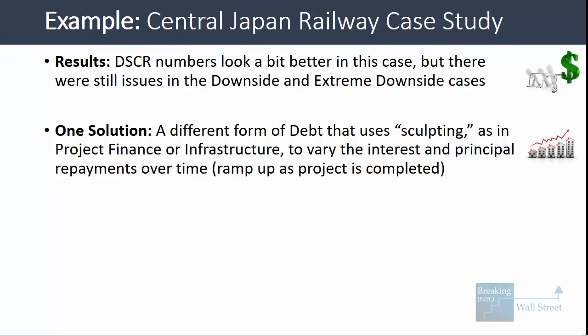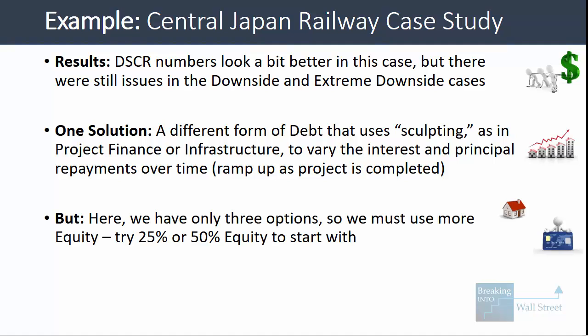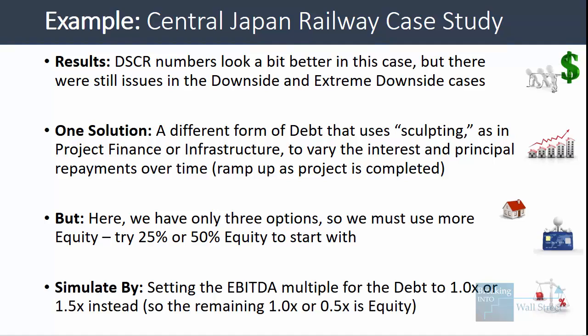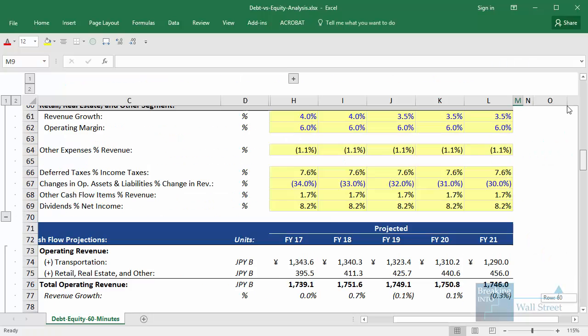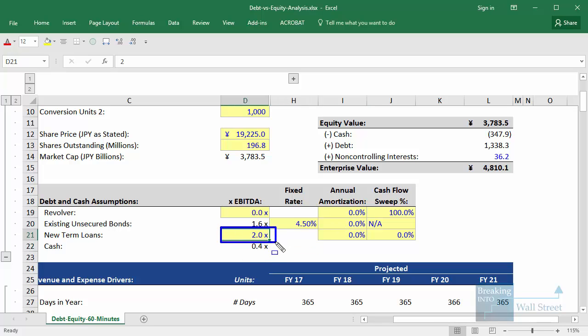The overall conclusion is the numbers look a bit better with subordinated notes, but there are still some issues in the downside and extreme downside cases. One solution would be to offer a completely different form of debt using sculpting — common in project finance and infrastructure — which lets us vary interest and principal repayments over time as the project generates more revenue. But that is not an option here since we only have three options, so we're going to have to use more equity. We could try 25% or 50% equity, simulating this by setting the initial EBITDA multiple for debt to 1.5x or 1x instead of 2x.